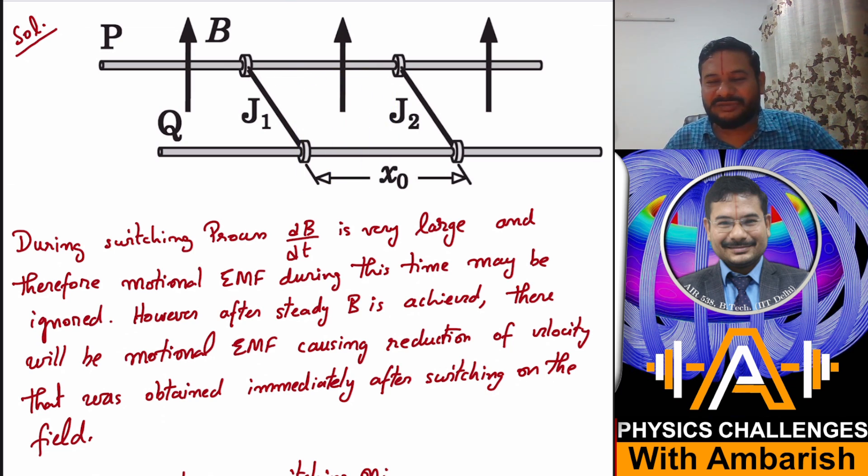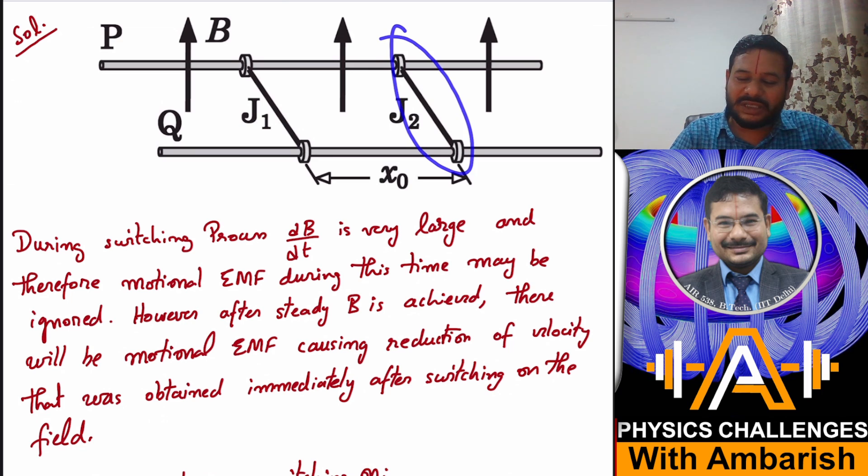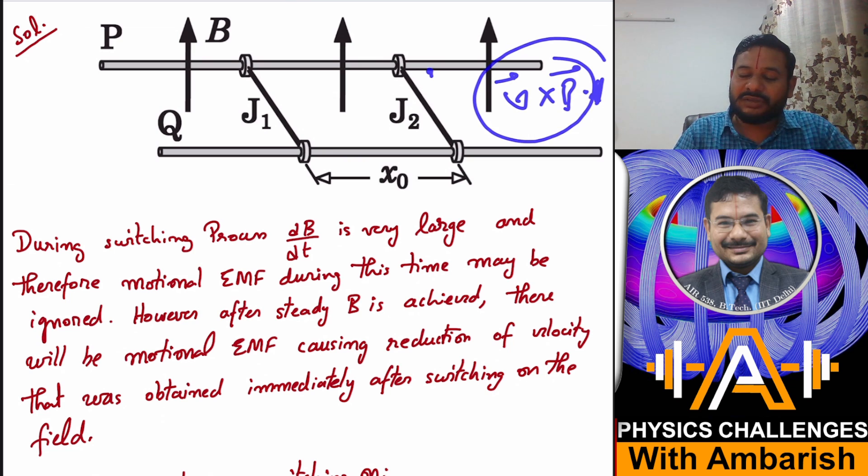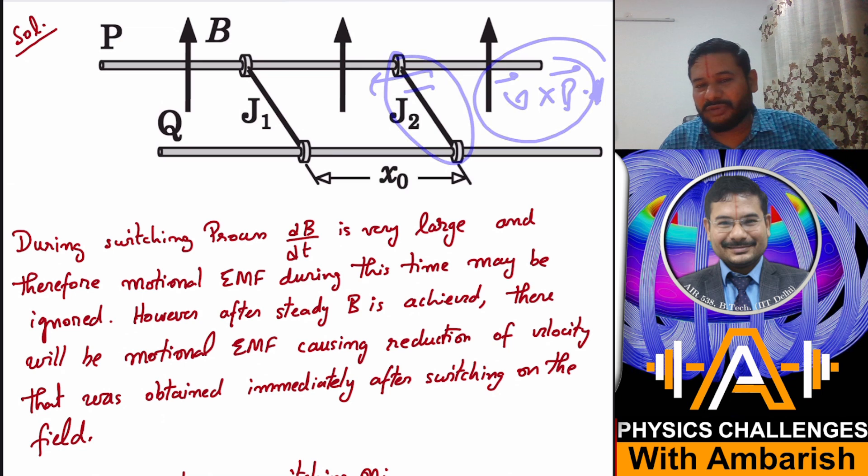What we can assume is that during the process when magnetic field is being switched on suddenly, the EMF due to the changing magnetic field is very very large as compared to the motional EMF in these rods. Because as the magnetic field is changing, there is some current flowing through these wires.